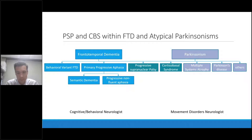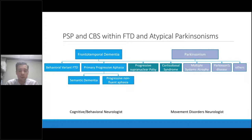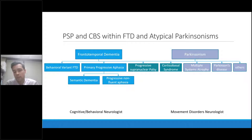Cognitive behavioral neurologists tend to treat frontotemporal dementia and movement disorders neurologists tend to treat Parkinsonism. Depending on where you are, you might be seeing different types of neurology specialists. If you are near a large academic tertiary care center, it's not uncommon for patients to see both — I do refer many of my patients over to cognitive colleagues, and they can help manage some of the features.